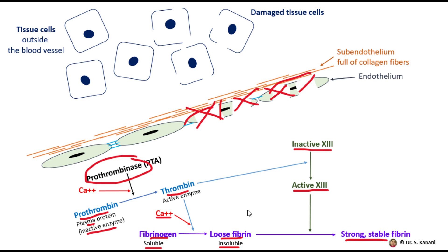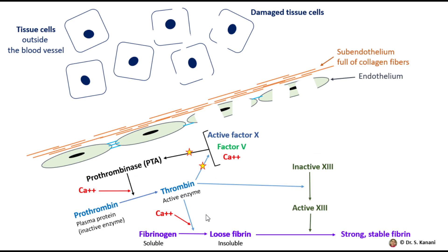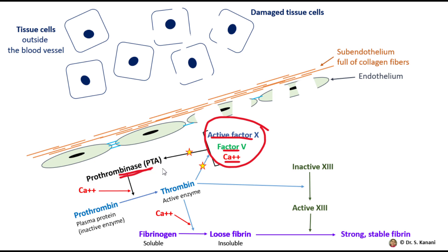So far, we have two functions for thrombin. The next thing to know is that thrombin can act as a catalyst — it basically speeds up the binding of active factor 10 to factor 5 and calcium ion. When these three bind together, prothrombinase forms. So thrombin, by accelerating the binding of active factor 10 to factor 5 and calcium ion, speeds up the formation of prothrombinase.